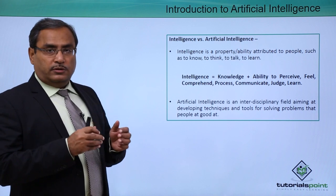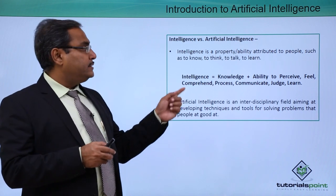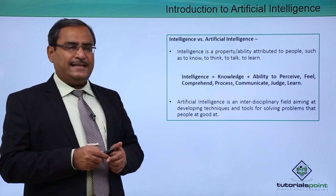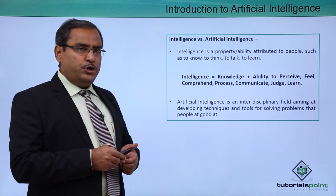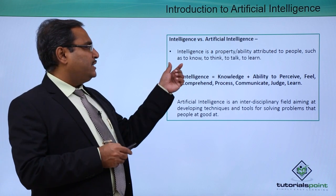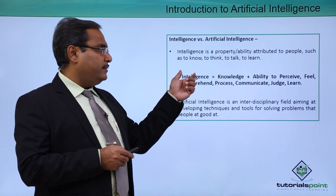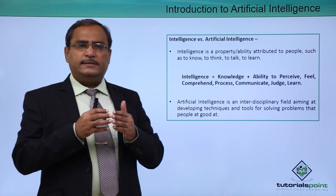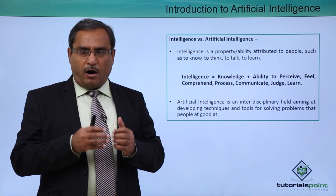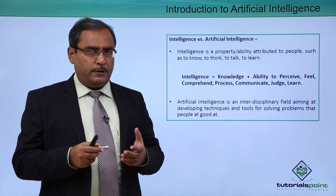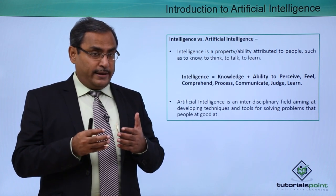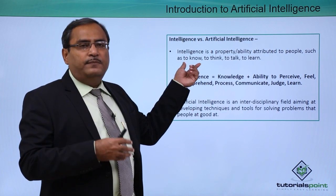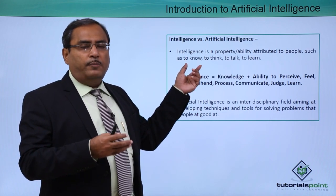First, we are going to discuss what is intelligence. Intelligence is a property — it can also be called as an ability attributed to people — such as to know, to think, to talk, and to learn. That means intelligence is nothing but an ability of a person who can think, can learn, can talk, and can know some extra information from the outside world.